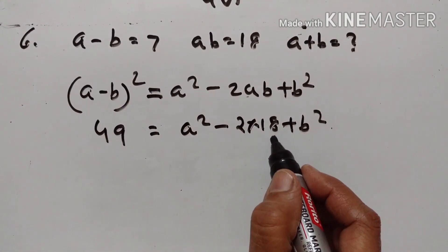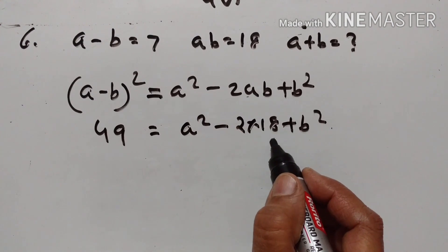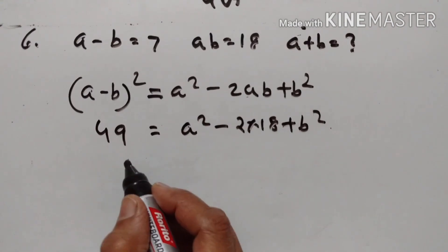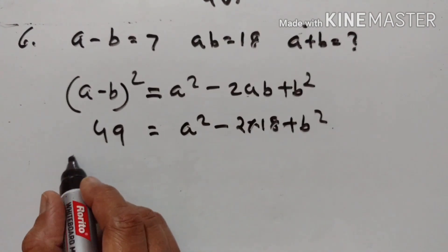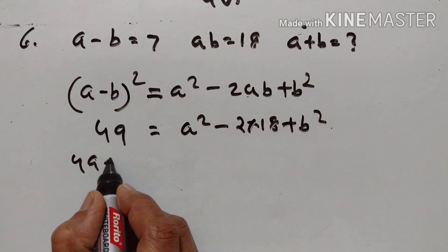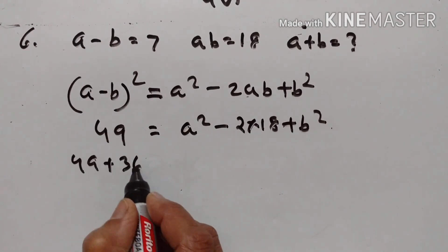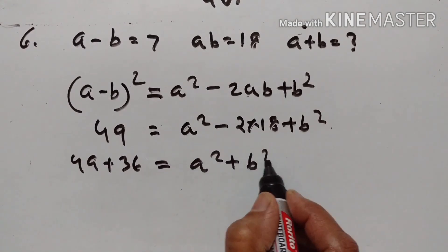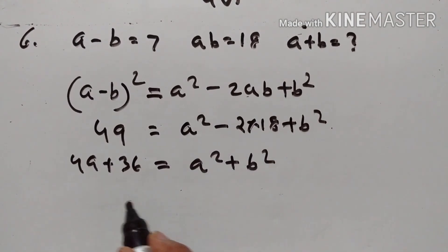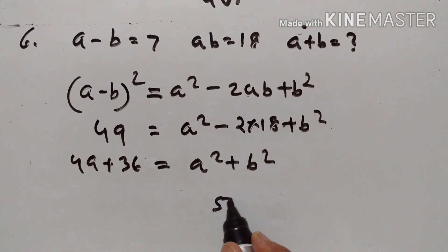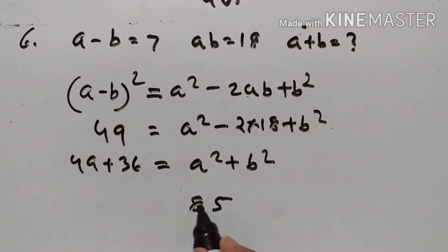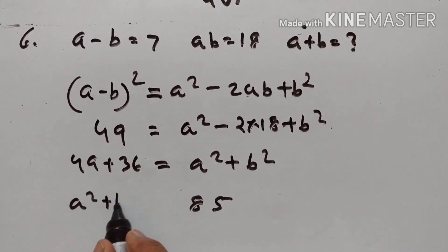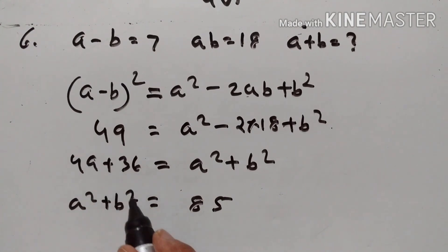2 × 18 = 36. So 49 = A² + B² − 36, which means 49 + 36 = A² + B². Therefore A² + B² = 85.